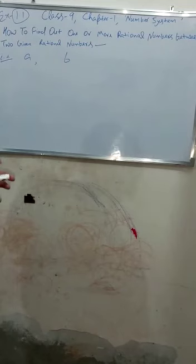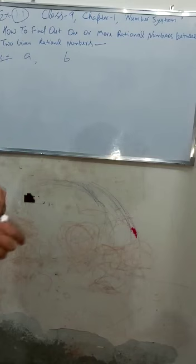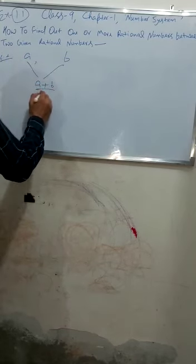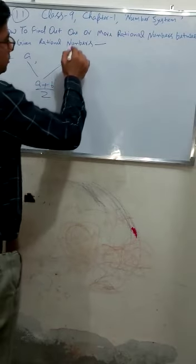For example, if two numbers A and B are given to us, and we want to find out the rational numbers between them — the rational numbers A and B are given and we want to find rational numbers between them. What we will do: we will add them and divide by 2, that is A plus B upon 2.